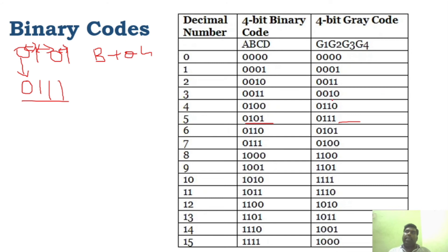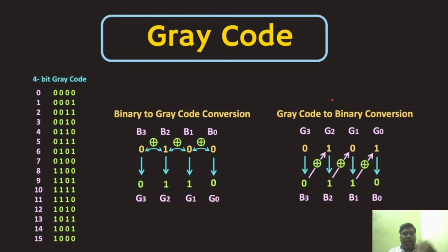Now, grey code to binary conversion — this is very important, a two-mark problem. For converting binary to grey code, you use the MSB directly, then XOR adjacent bits. For grey code to binary, you use the same MSB, then XOR the MSB of the binary with the second bit of grey code, then XOR that result with the third bit, and so on.